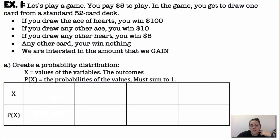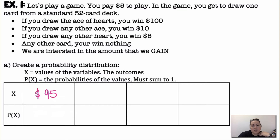First example — let's play a game. You pay $5 to play. You draw one card from a standard 52-card deck. Draw the ace of hearts, you win $100. Draw any other ace, you win $10. Draw any other heart, you win $5. Any other card, you win nothing. We're interested in the amount you gain, so since you paid $5, winning $100 only nets you $95. The possible gains are $95, $5, $0, or negative $5.